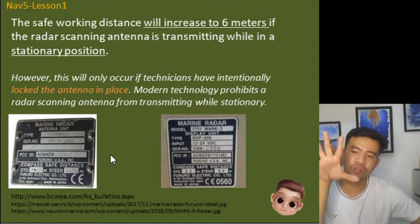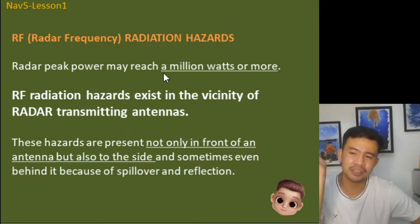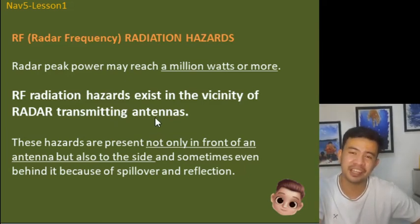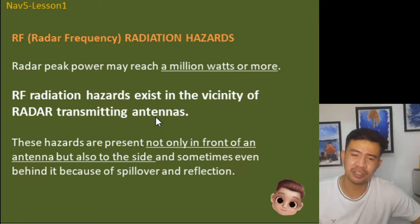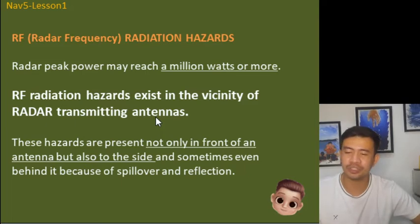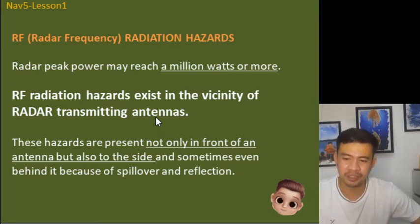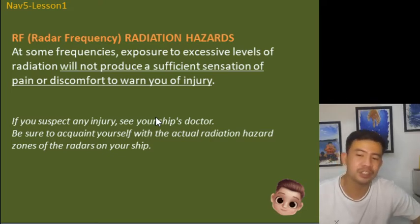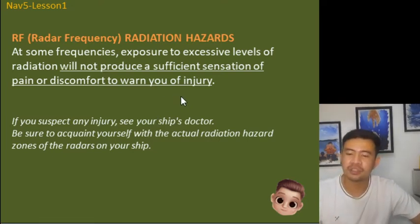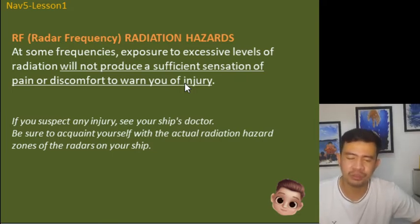RF radiation hazards are significant: radar peak power may reach a million watts or more. RF radiation hazards exist in the vicinity of the radar transmitting antenna, but not at the monitor. There are safe working distances we need to observe. These hazards are present not only in front of the antenna but also on the sides. However, this will not actually produce a sufficient sensation of pain or discomfort to warn you of injury, so if you do experience pain, report it to the officer or the ship's doctor.